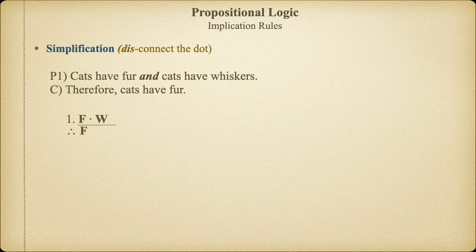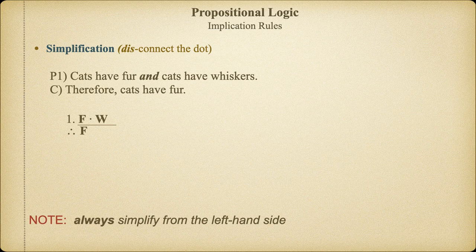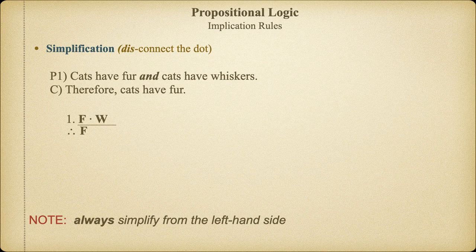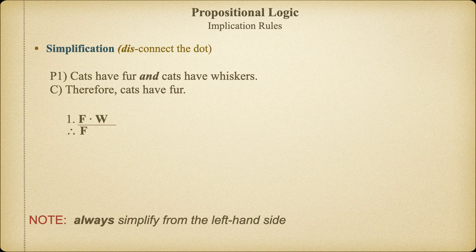Remember, a valid deduction must have an unbroken chain of inference making the outcome of each step in the argument necessary. Also, we're going to adopt an operational rule that we can only simplify the left-hand proposition. While we can, in fact, validly conclude W on a line by itself using the rule of simplification, we would first have to move it to the left-hand side of the proposition. Now we'll introduce a rule for this in the next section. But for now, just as with the disjunctive syllogism, we're only going to allow simplification of the proposition on the left.